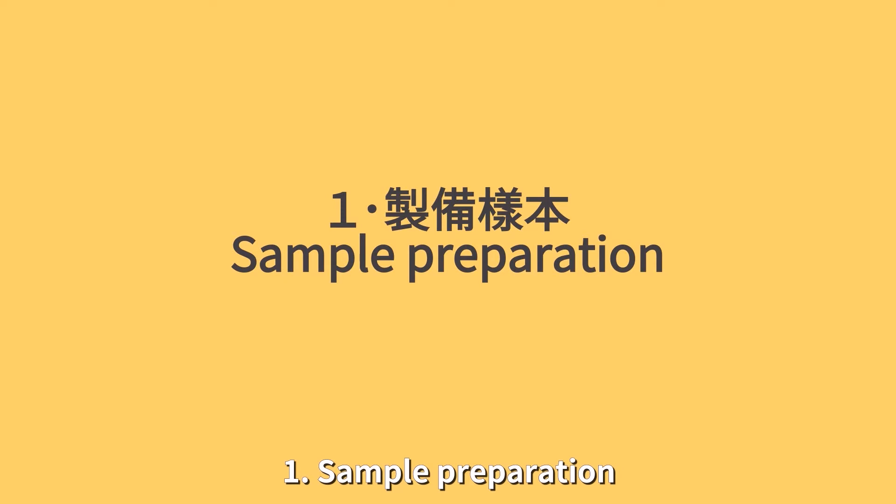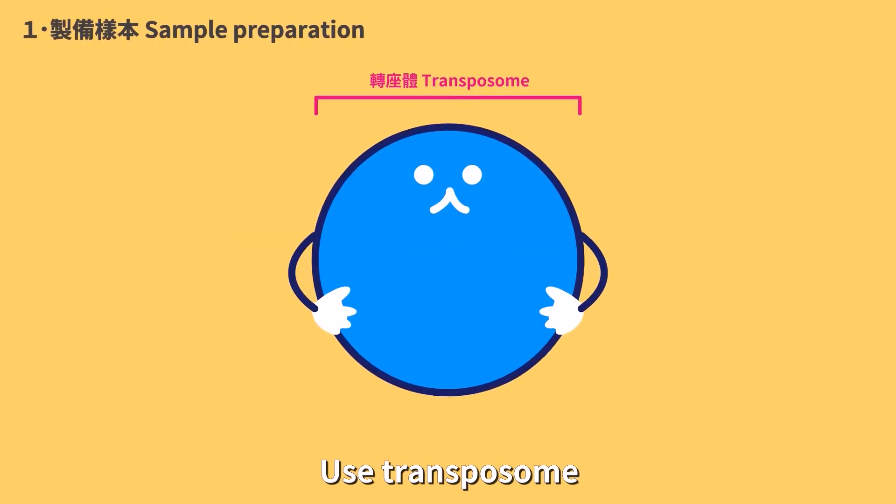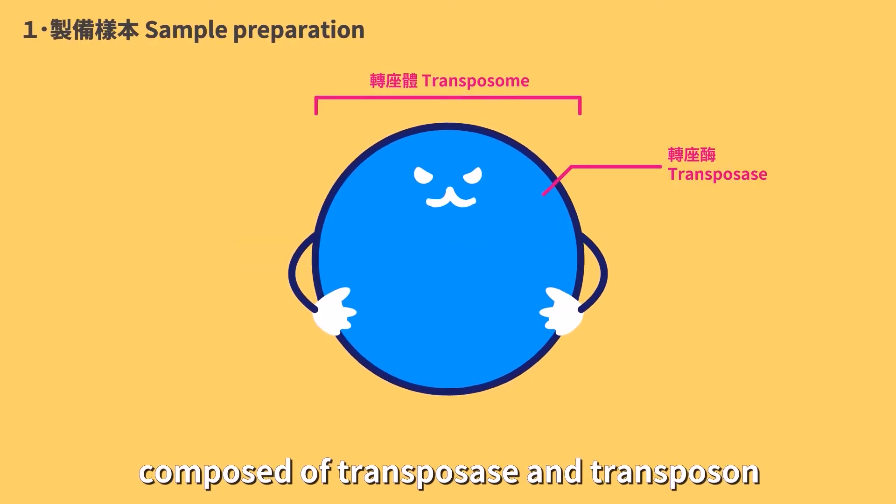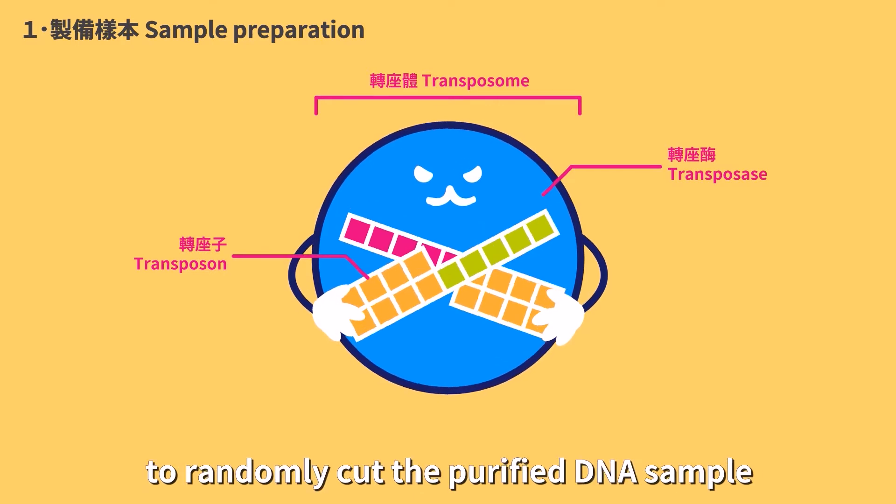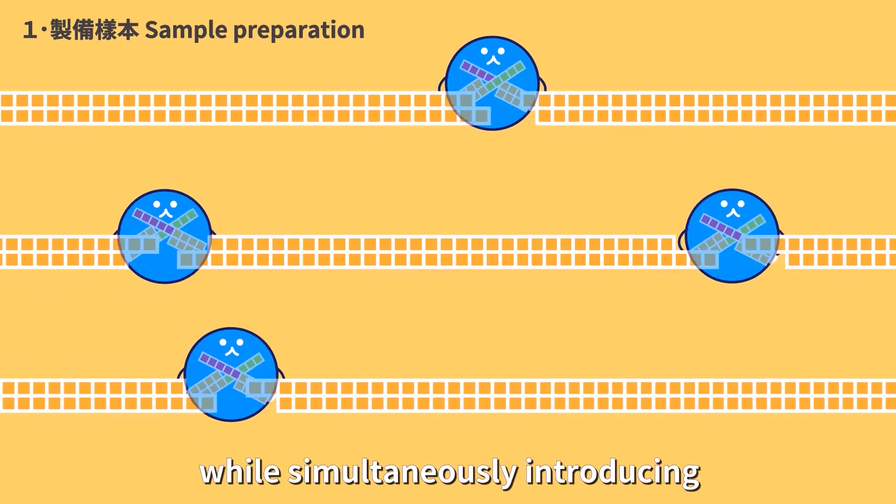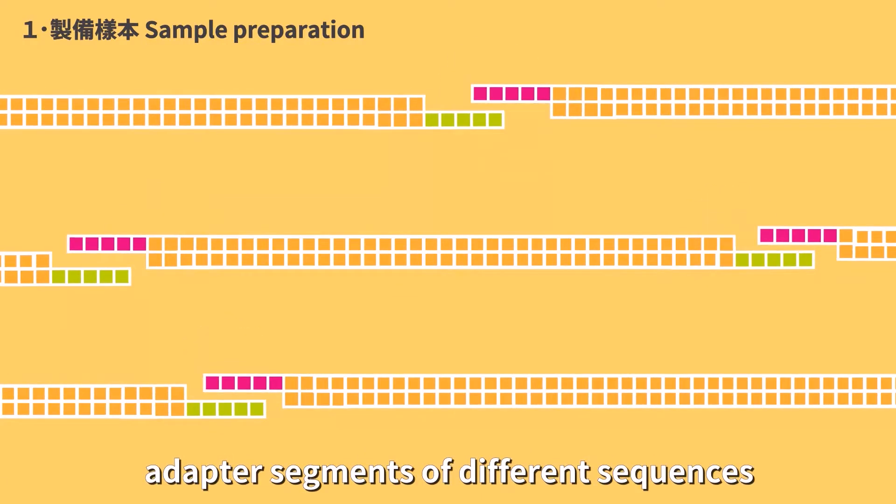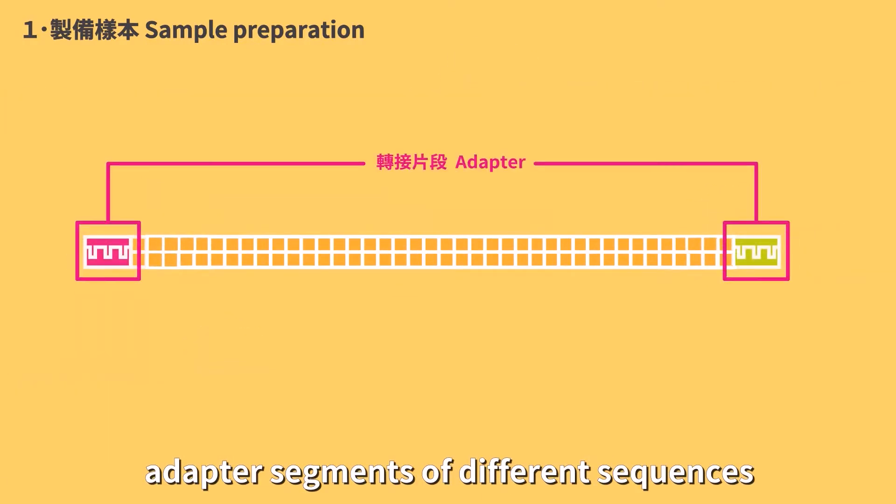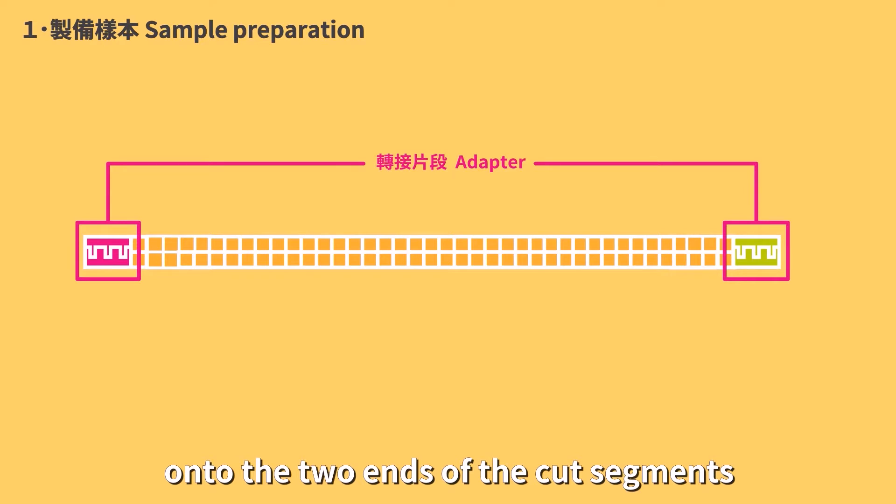Sample preparation. Use transposome, composed of transposase and transposome, to randomly cut the purified DNA sample into short segments, while simultaneously introducing adapter segments of different sequences onto the two ends of the cut segments.